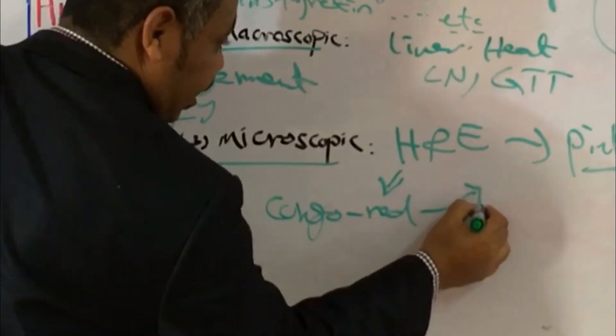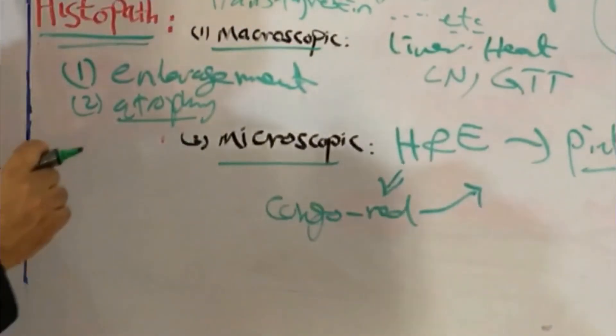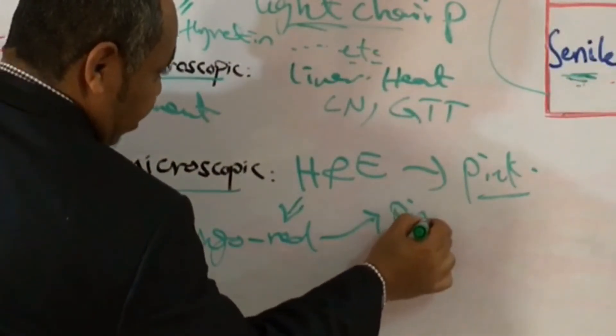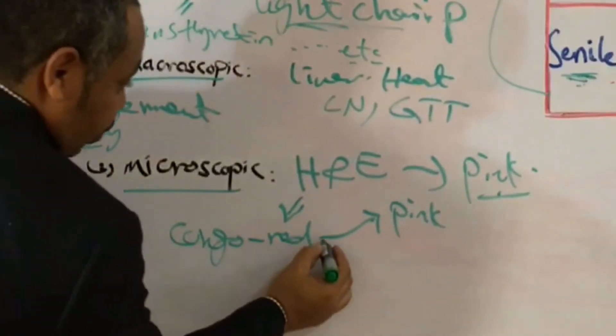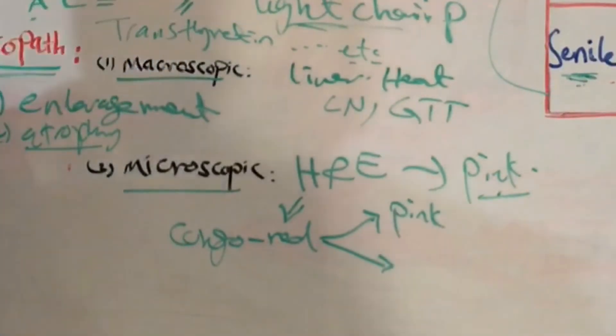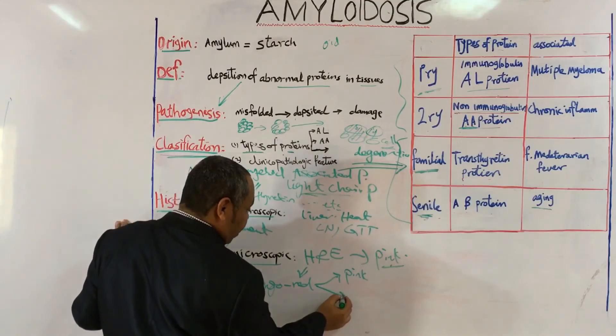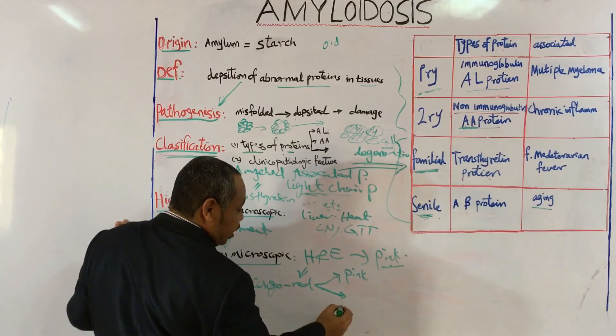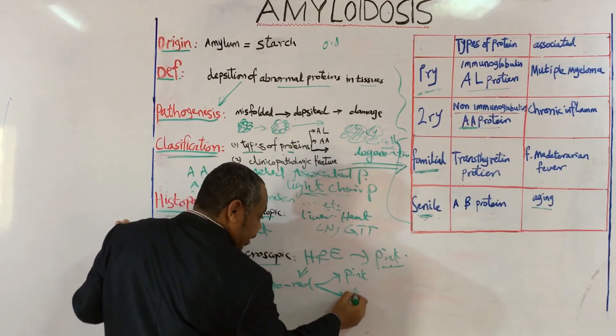And it will give you actually, in normal, I mean in light microscope, it will give you a pink color also, just like H and E. But if you go for another type of microscope, which is called bipolar microscopy or fluorescent microscopy, it will give you apple green color.